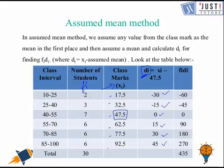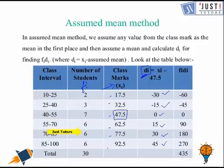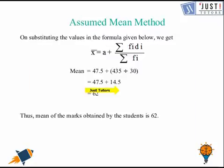Now we have got the formula and we have got all the values already in this table so we just need to substitute it. Remember that A is 47.5, sigma fi*di is 435. So let's try to substitute the value, that was 47.5 add bracket 435 divided by 30 that was sigma fi. So now we are dividing it that becomes 14.5 and we can find out that the mean of this question would be 62.